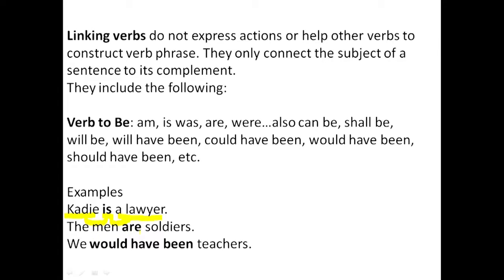Next example: the men are soldiers. Are here is a linking verb. It links the men — the subject — to the word soldiers, which is the other name for the men. Men is A and soldiers is B. Are is a linking verb here — not an auxiliary verb — because there is no -ing word after are.